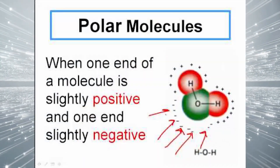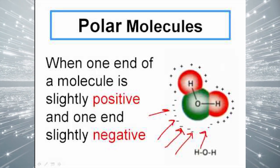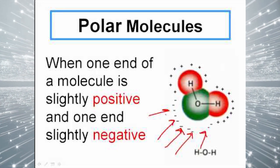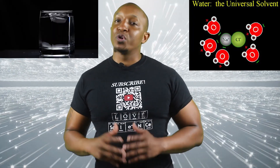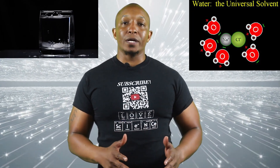A compound with one negatively charged side and one positively charged side is called a polar molecule. Since opposite electrical charges attract, water molecules tend to attract each other, making water kind of sticky. The side with the hydrogen atoms with the positive charge attracts the oxygen side with the negative charge of a different water molecule. This polar chemical property of water is why it's called the universal solvent, because it dissolves more substances than any other liquid.